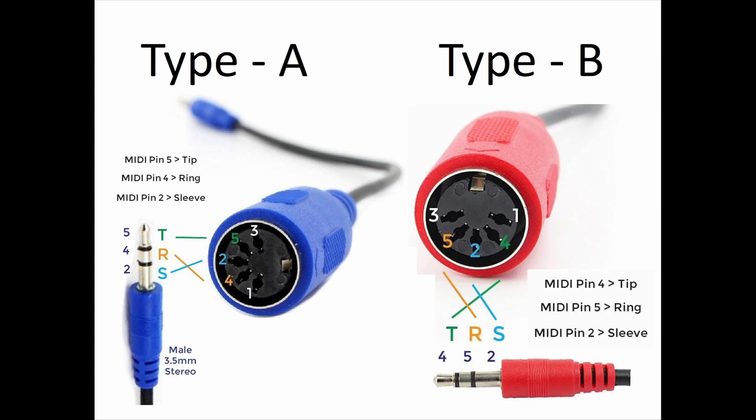If you need a Type B, you need a Type B. If your equipment needs a Type A, you need a Type A, because they're not interchangeable and they're not compatible.